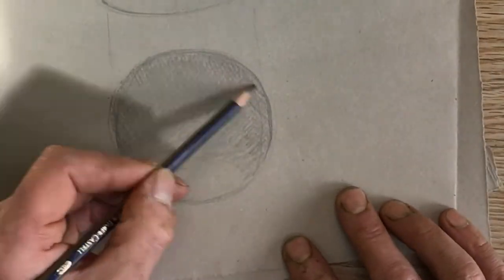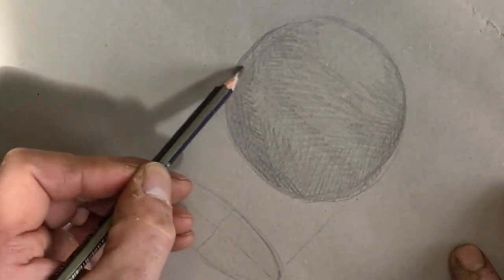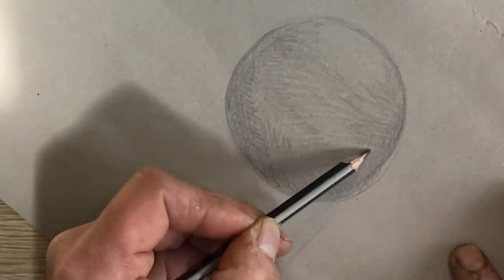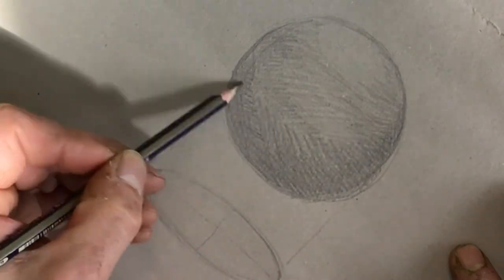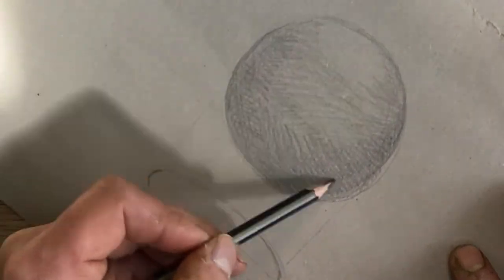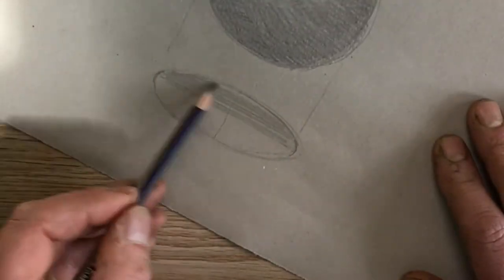As you need more pressure, adjust your grip. Again, build up in tones. The bottom of the sphere is going to be where least light is falling. So we're going to build up more layers in this area. You can already see it's starting to get spherical.